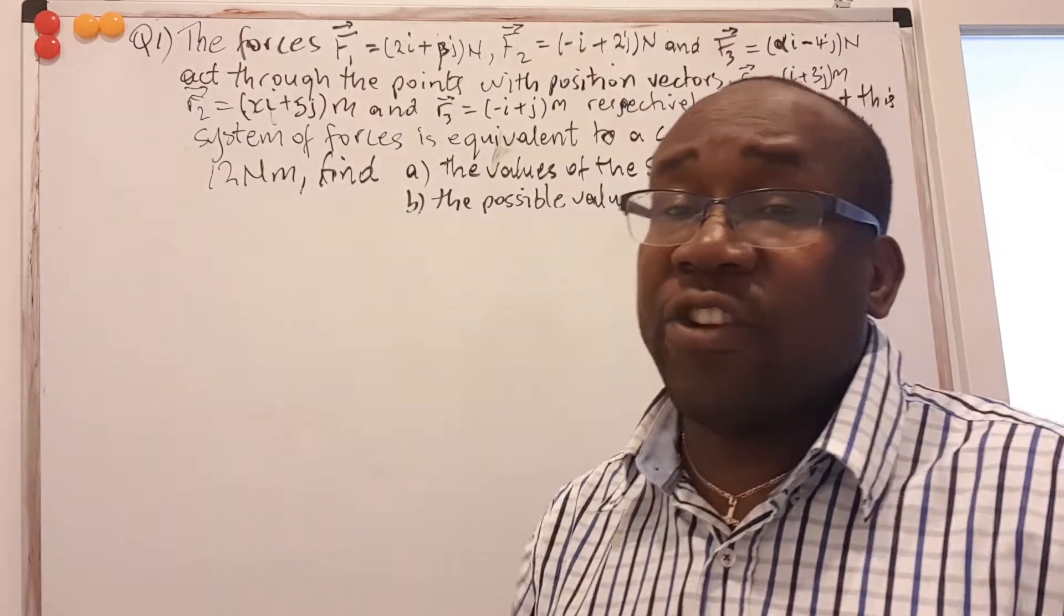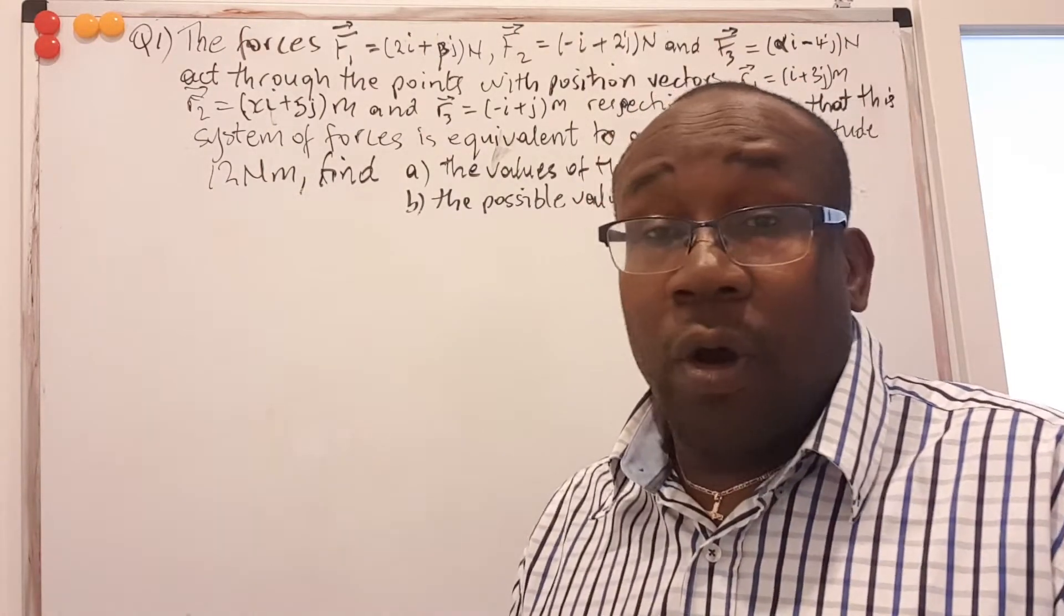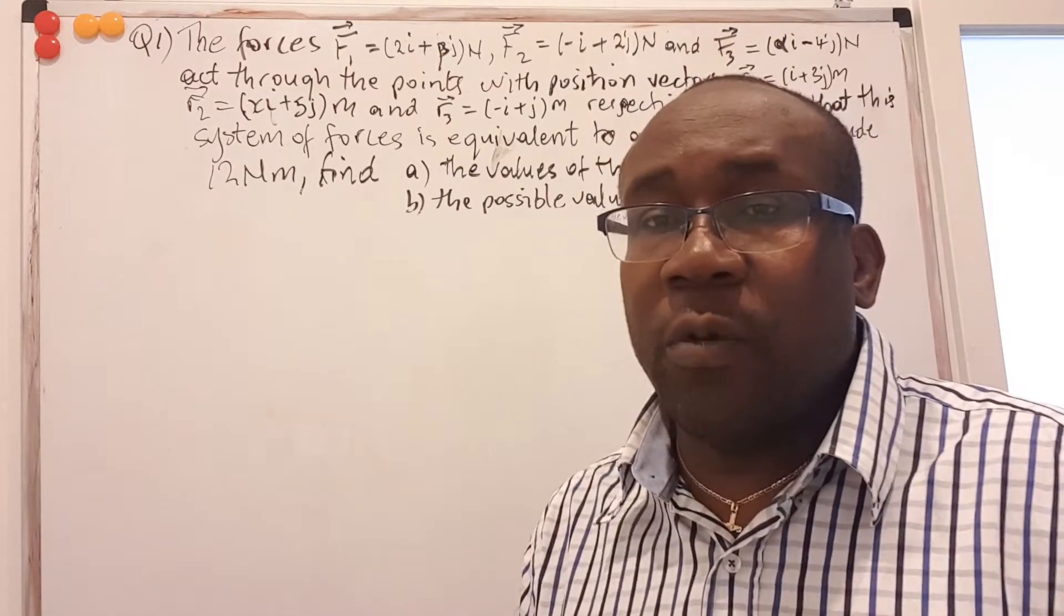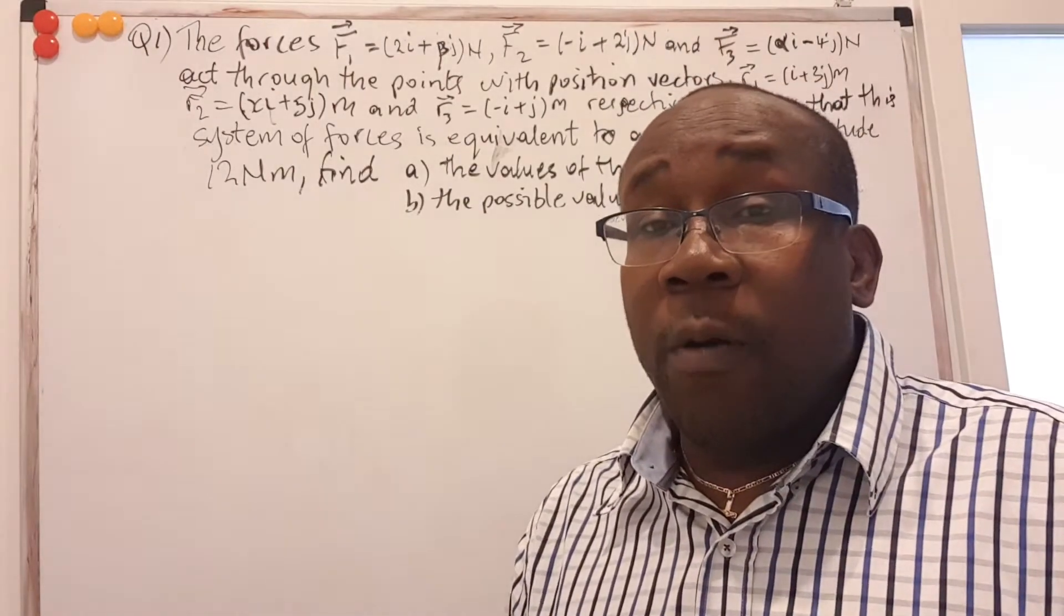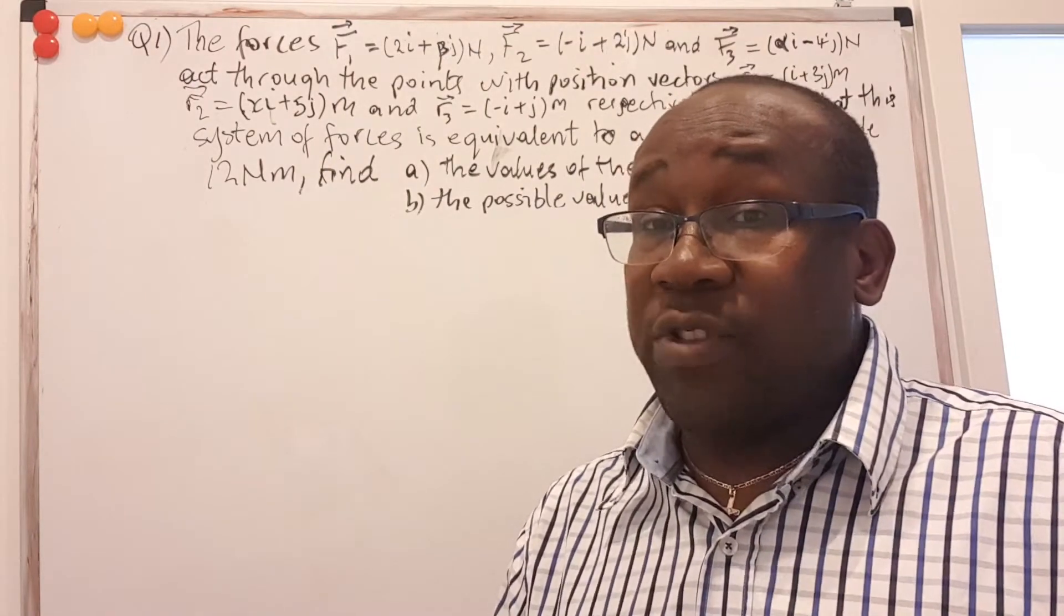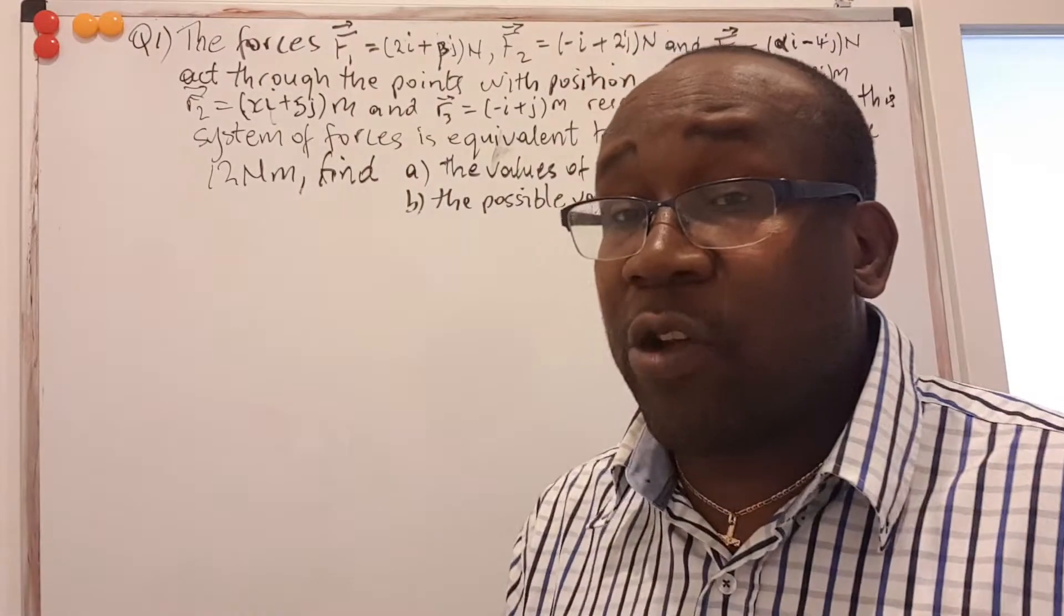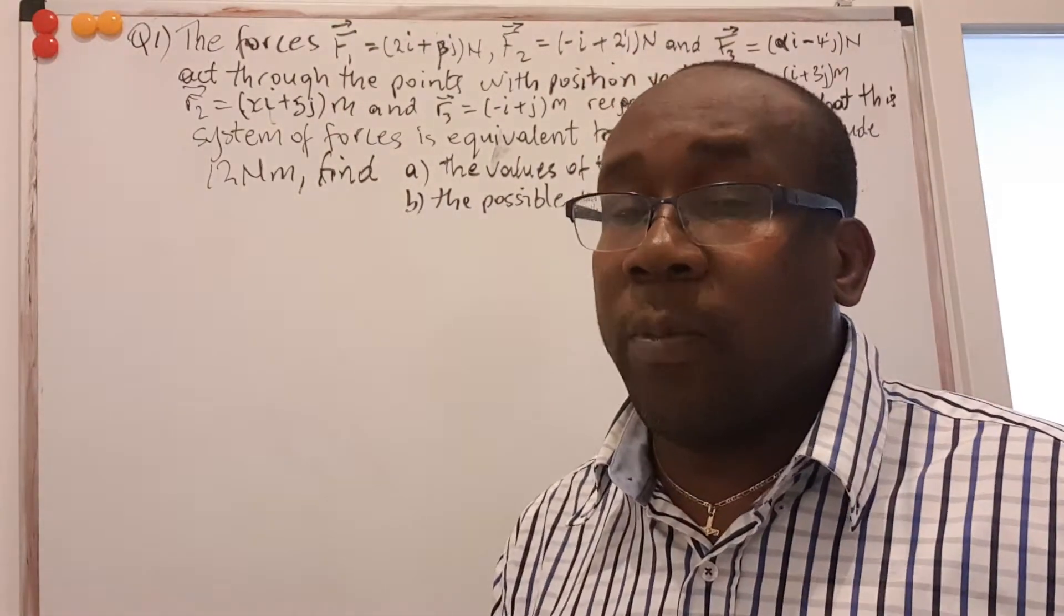They can form a resultant force. In that case, the particle moves in the direction of the resultant force. Or the sum of these forces can be equal to zero and the object doesn't move. It stays on the spot. Or the sum of the force is equal to zero, but the object rotates about an axis, not moving in the resultant direction, but rotates about an axis. That's what we call a couple.